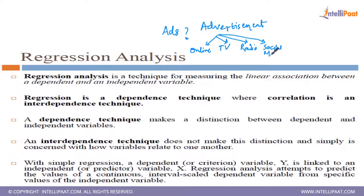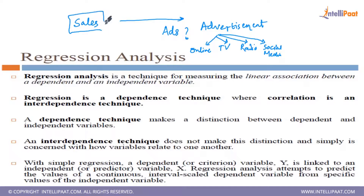If you are going to predict sales and it depends on advertisements, then sales is your dependent variable while advertisement is your independent variable.